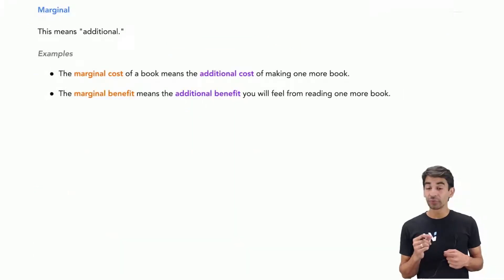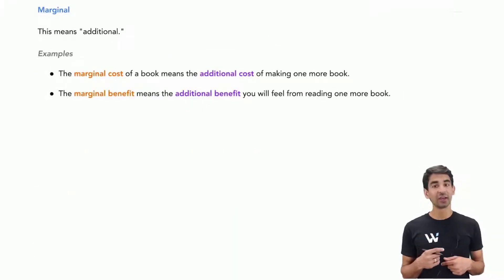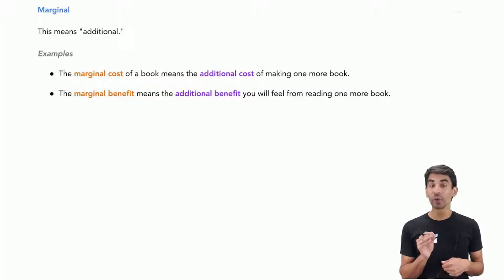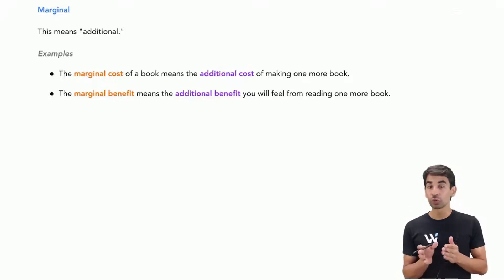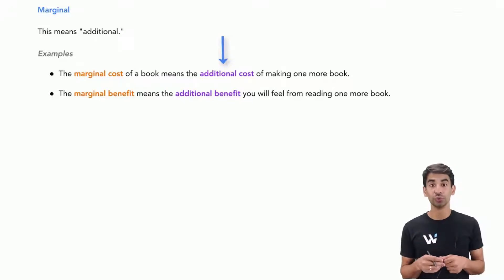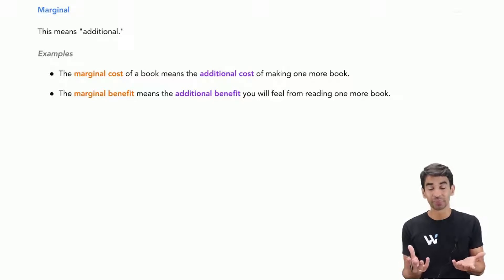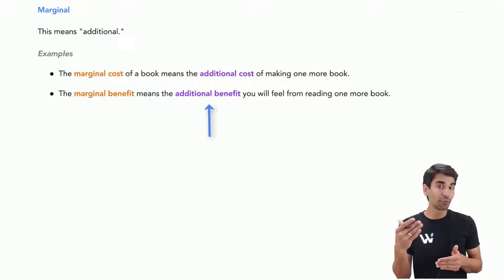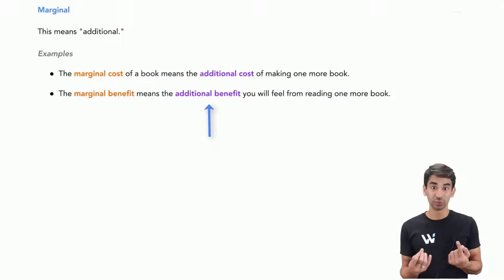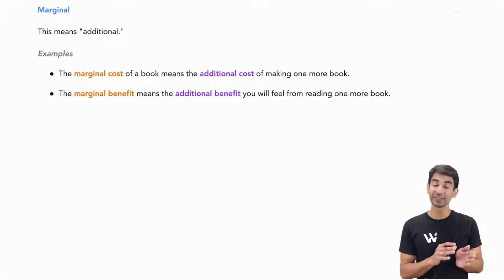Marginal is also a very important term — we're going to see it many times across different chapters. Whenever you see marginal, always think of the word additional. For example, marginal cost means the additional cost of making one extra shoe, one extra book, one extra unit of whatever. And marginal benefit means the additional benefit from consuming one extra unit — one extra coffee or milkshake. So marginal always means additional.